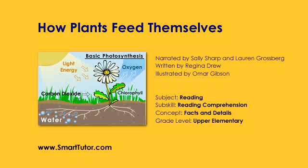Photosynthesis begins at the roots of the plant. The roots suck up water from the ground, which travels to the leaves through tubes in the stems of the plant called xylem.